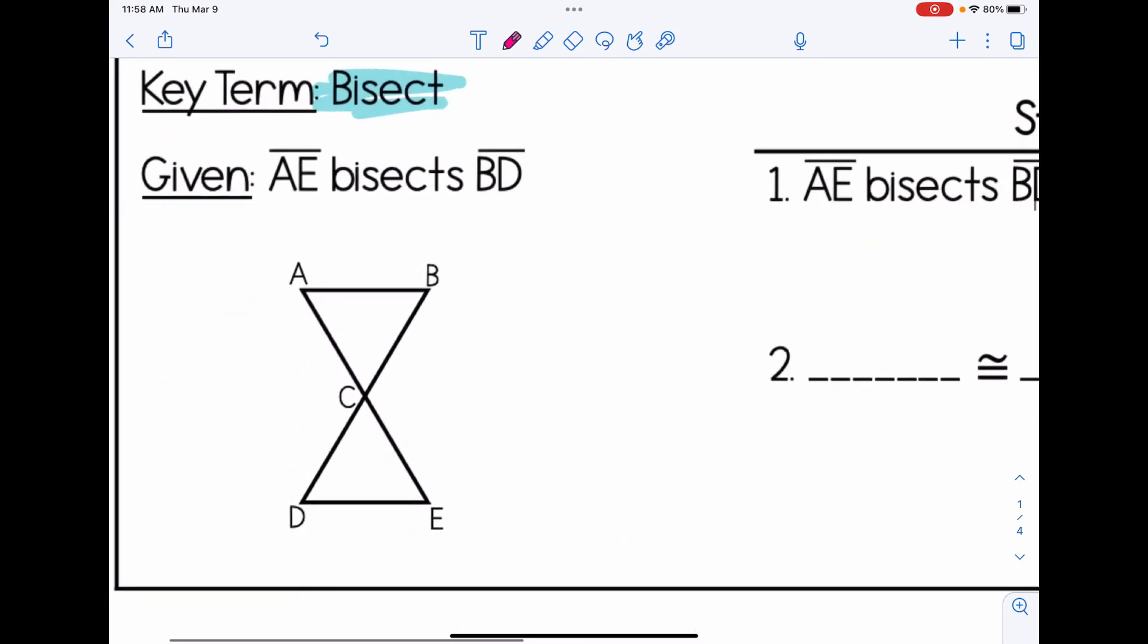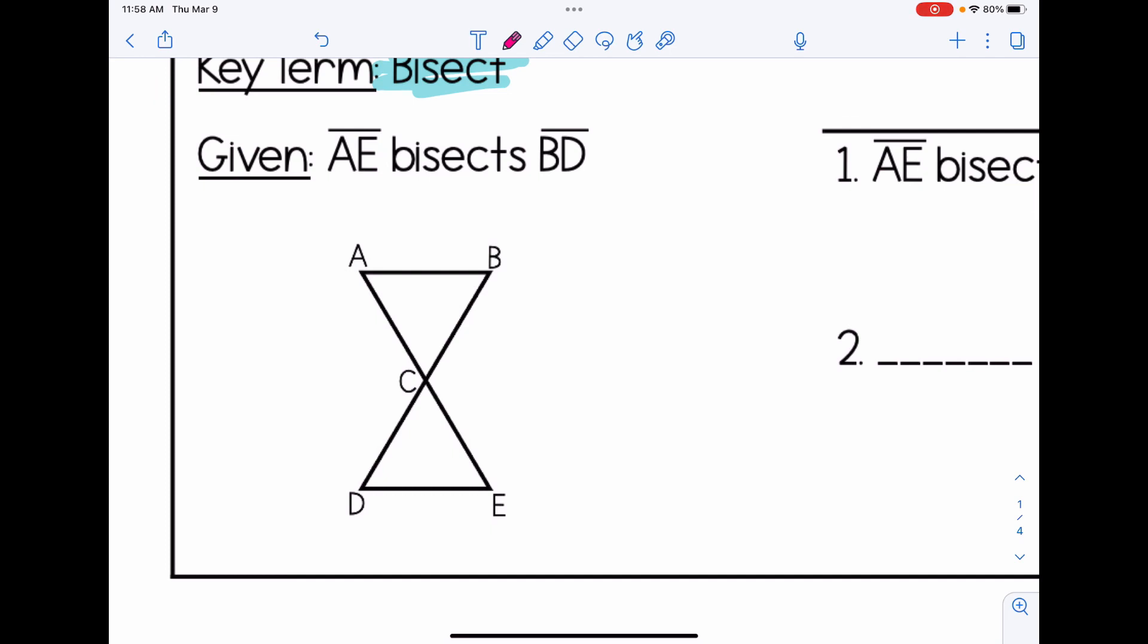For our last example, we have the word bisect. AE bisects BD. Always look at whatever comes after the word bisect. That's what's being cut in half or divided into two congruent parts. So if I look at BD, the two congruent parts are BC and DC.